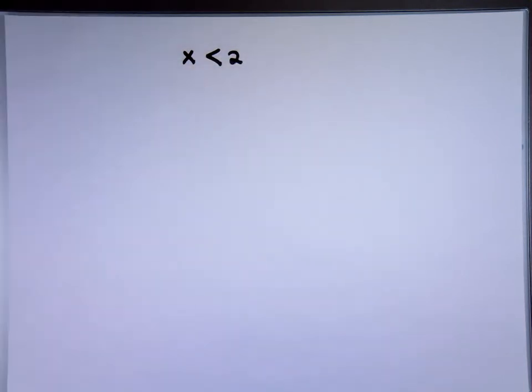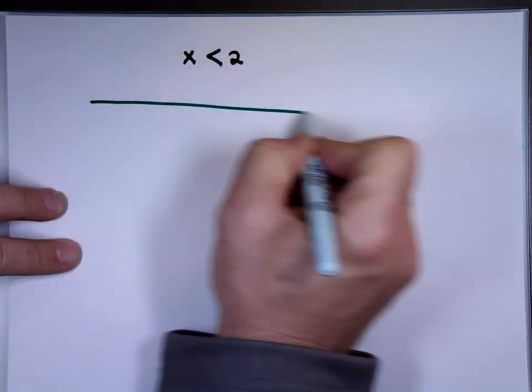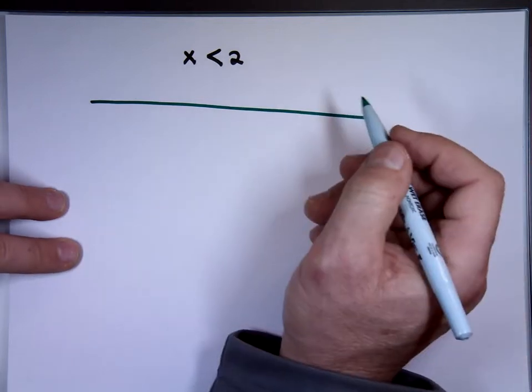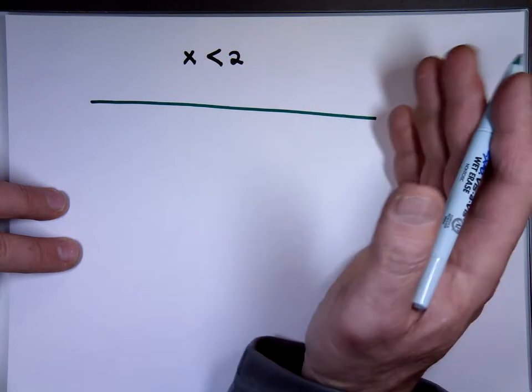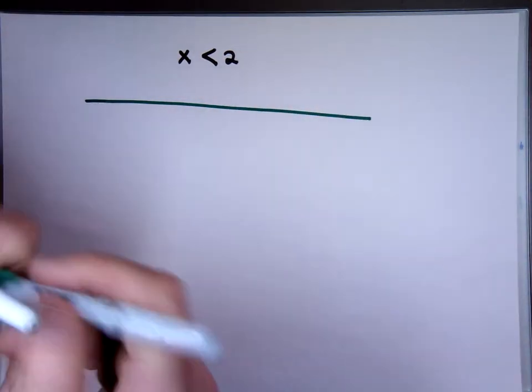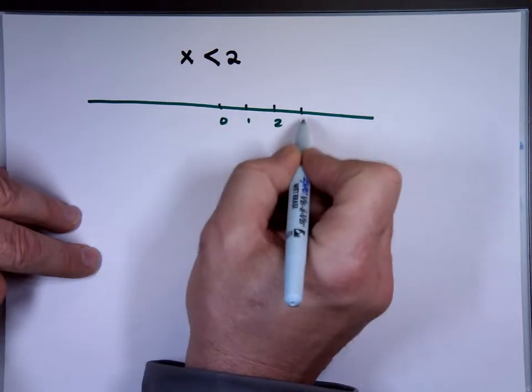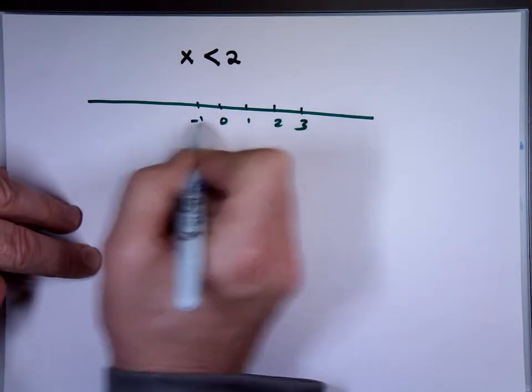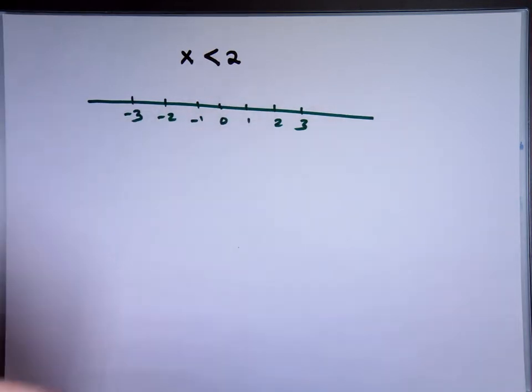x is less than 2. You can't say 3. 3 is not. You can't say 1 or 0. 1 is a solution, but that's not the only solution. There's lots of them. There's a lot of points. This is the 0, this is the 1, this is the 2, this is the 3, negative 1, negative 2, negative 3. Now, it says less than 2. Where is the 2? It's right here.